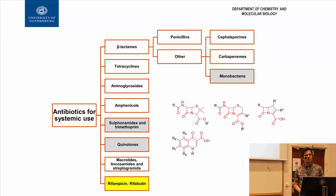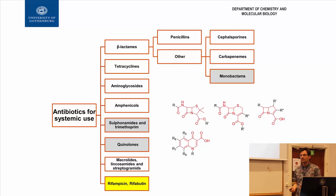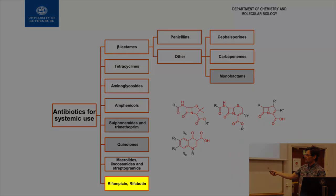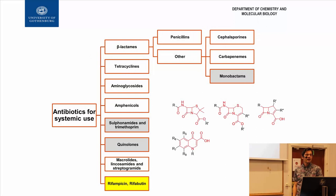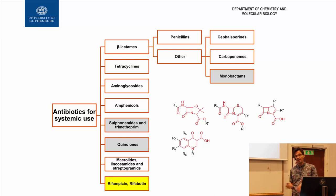Tuberculosis is considered to be a different sort of infection, a bit tricky to handle. This class — you see there are only two names here — meaning very few drugs are available to treat it. You might say tuberculosis is not a problem in Sweden, so we don't have to worry about that. But we travel to countries where tuberculosis is a problem, so you can get infected.